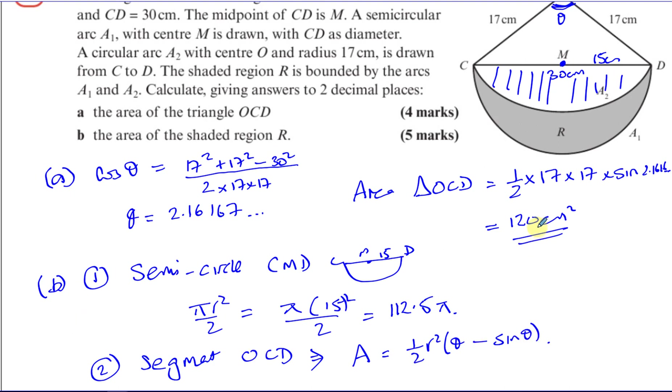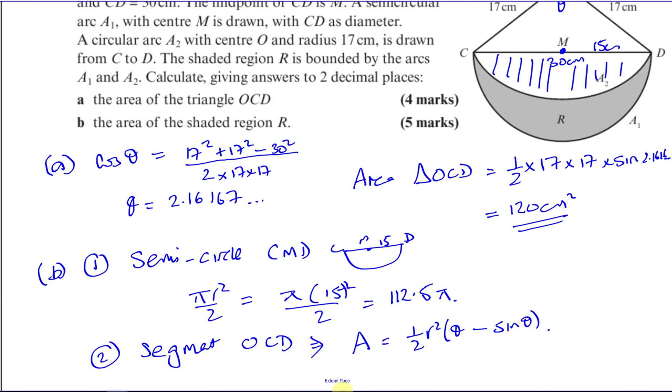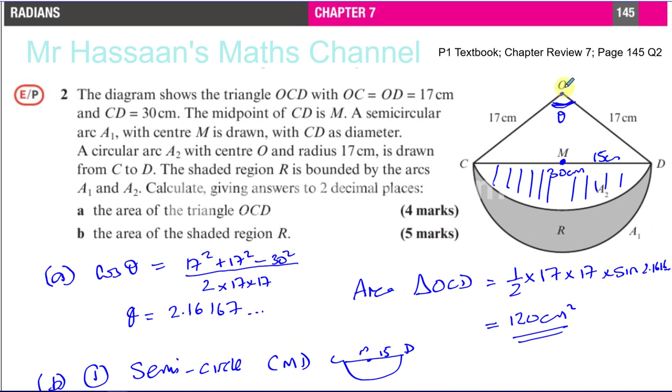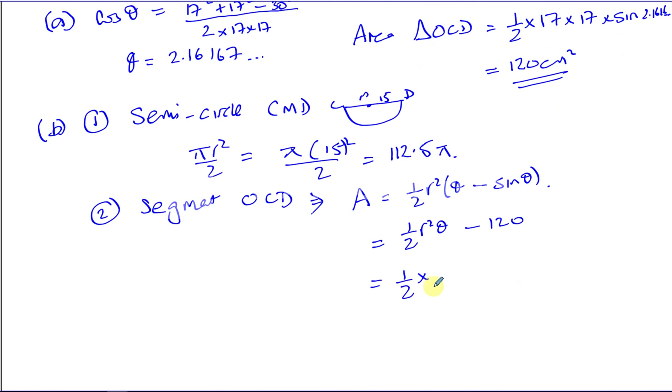We already found the area of the triangle, so we could, if you want, just do a half R squared theta minus 120 because we know the area of the triangle, so that's fine. So you can just use a half times, now the radius of this sector is 17, not 15, 17. So it's a half times 17 squared, 17 squared times theta, which is 2.1616 dot dot dot. And we've got to take away from that 120.